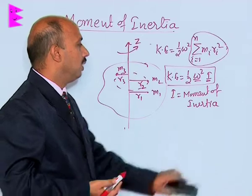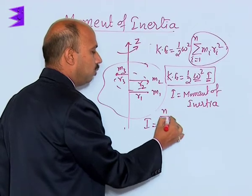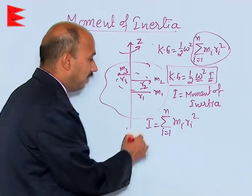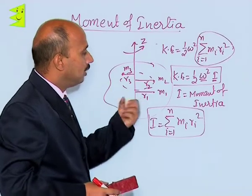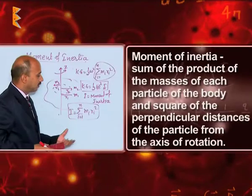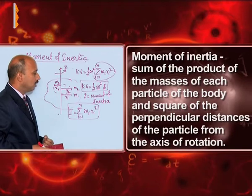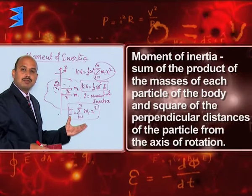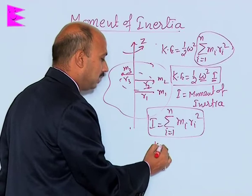Now, we can write: I equals the summation from i equals 1 to n of mᵢ rᵢ squared. So we can define moment of inertia: the moment of inertia of a rotating body about an axis is defined as the sum of the product of the mass of each particle of the body and the square of the perpendicular distance of that particle from the axis of rotation. Its unit is kg·m².